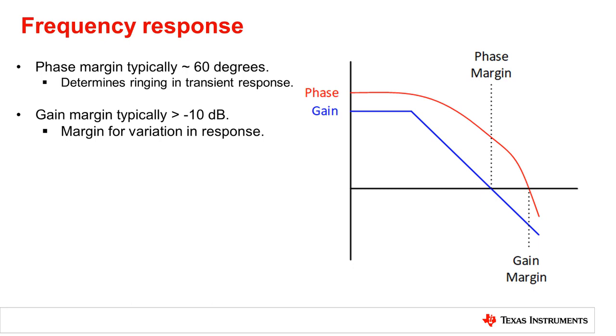Gain margin is the point where the phase crosses over and is generally greater than 10 dB. Note that this is done in order to account for variations in frequency response and to allow margin in the design.